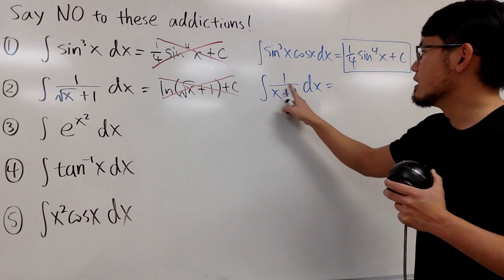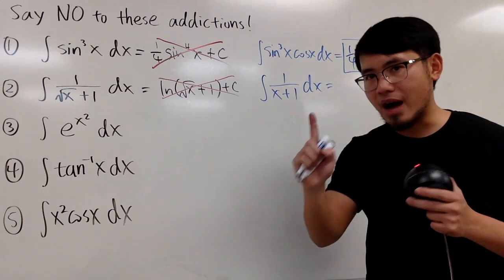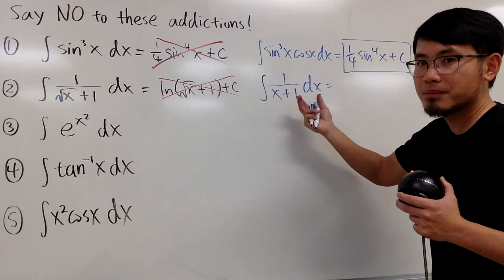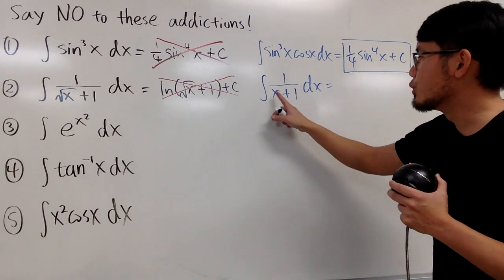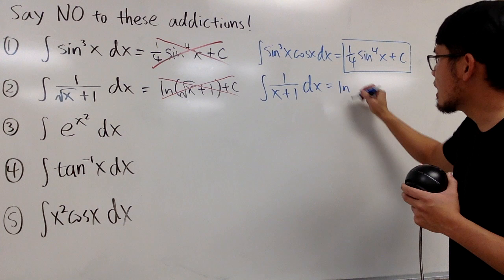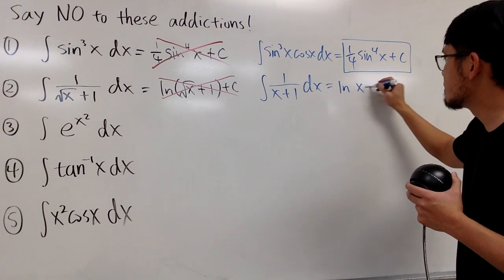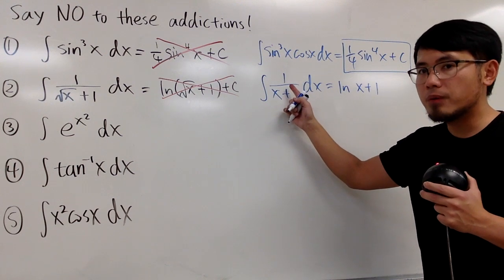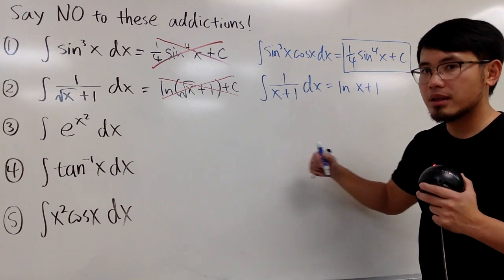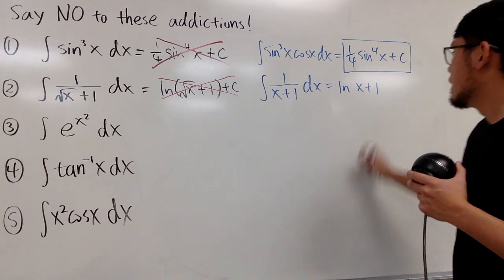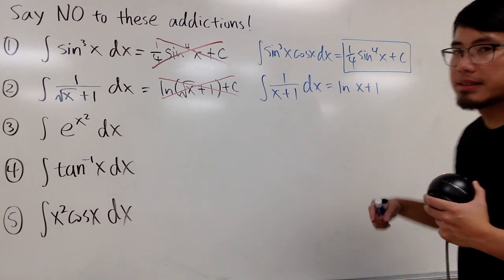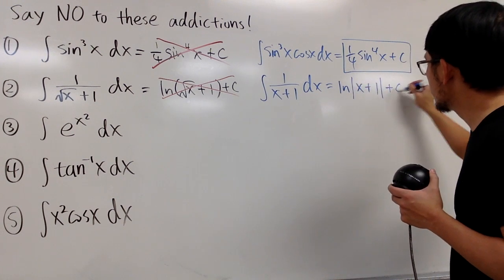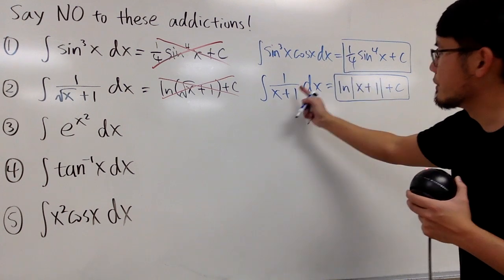If we differentiate the bottom, the derivative of x plus 1 is just 1. You end up with natural log because you're essentially doing u substitution with u equal to the denominator. We put on natural log and then the denominator, which is x plus 1. This only works if the denominator is x to the first power and the derivative is just 1, so you don't have to divide by anything else. Here, x plus 1 is not always positive, so you do need the absolute value. Don't forget the plus c — this is the correct answer.